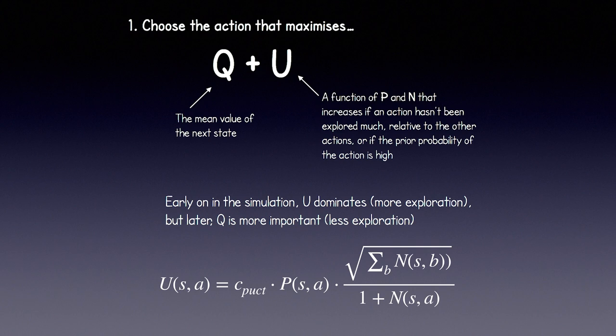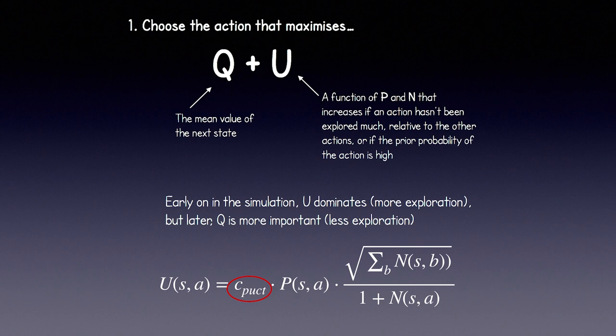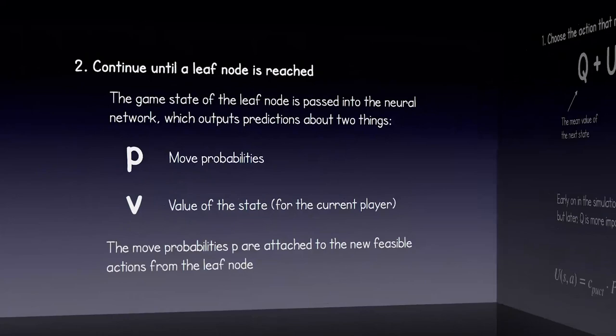Let's have a look at the equation for U. N is the number of times a particular state has been explored. P(S, A) is the probability of taking a particular action returned by the neural network. C_puct is a hyperparameter which controls exploration versus exploitation — taken straight from the AlphaGo Zero paper with a standard value of 1.0. Inside the square root on top, we're summing N across all possible branch actions from the given state, and in the denominator is 1 plus the N for the action being considered.